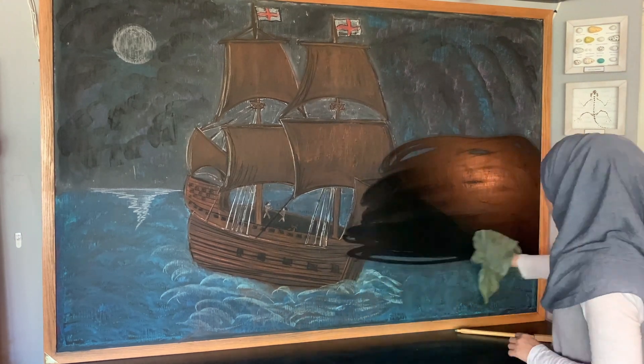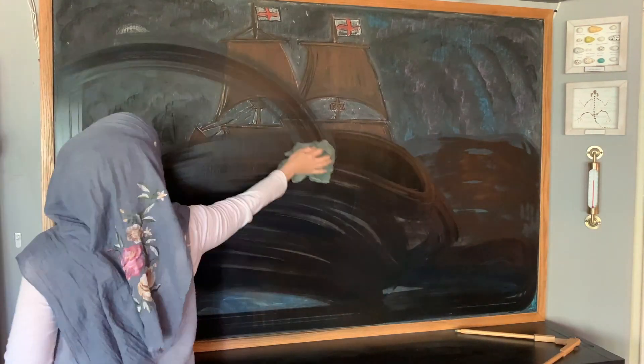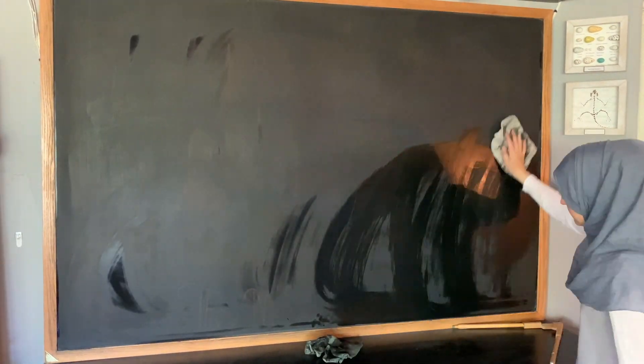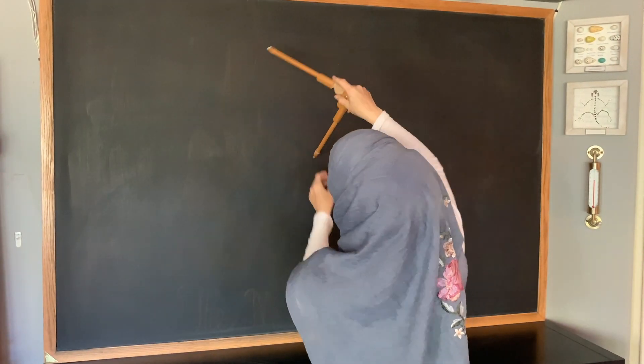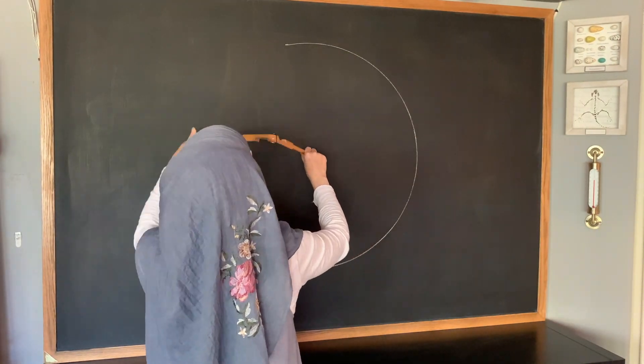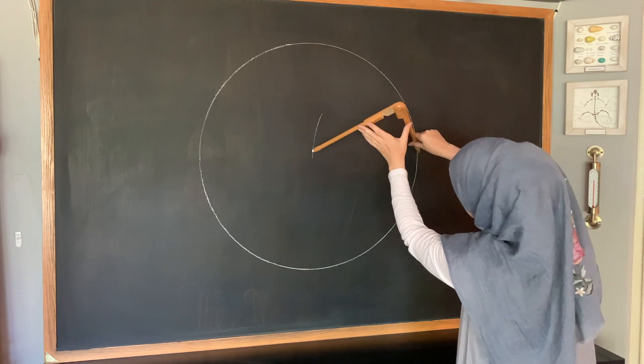Now the first thing we have to do is erase our chalkboard. This is always a little bit sad for me to do. I'm using a wet washcloth because we use highly pigmented chalks for our chalk drawings, and that's going to help get it nice and clean. Once it's dry, I'm going to start on my chalk drawing.